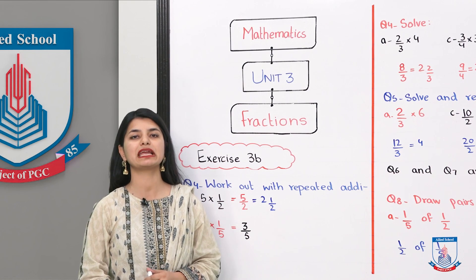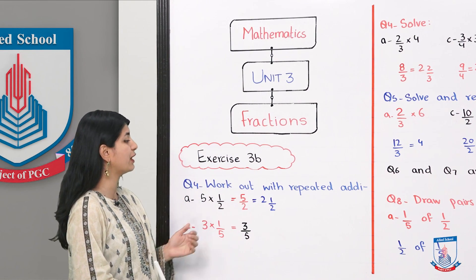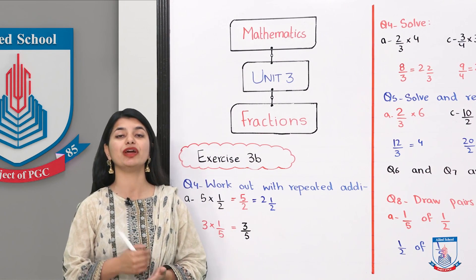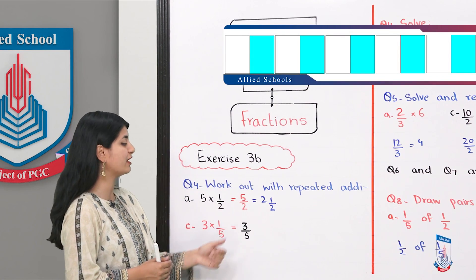After covering the first 3 questions, let's see the rest of the next exercise. Question number 4 is work out with repeated addition using diagrams. Diagrams are drawn in your textbook. You can also see them in the picture. So there are 5 different diagrams.